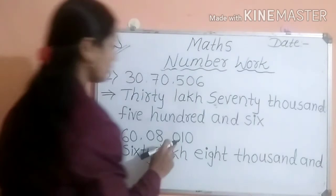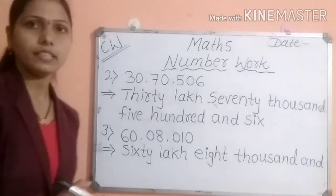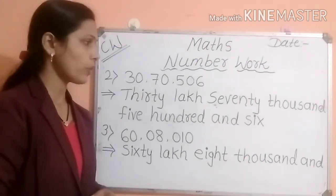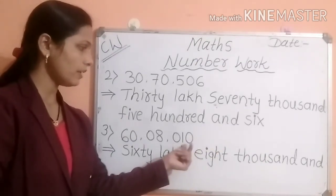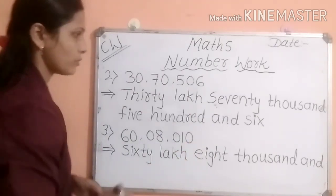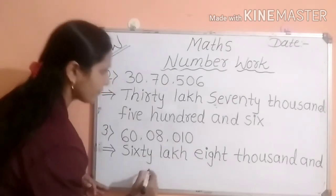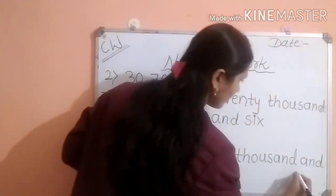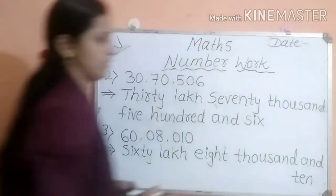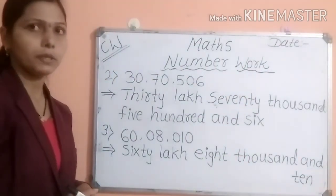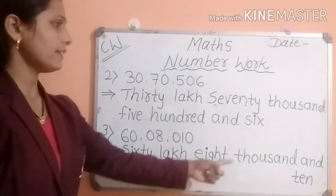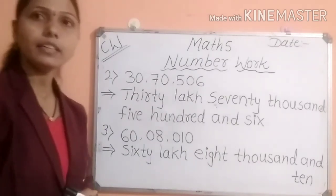Students, there is no digit at the hundreds place, so hundreds place is empty. So what we have to write is only tens and units — that is ten. So: sixty lakh, eight thousand and ten.